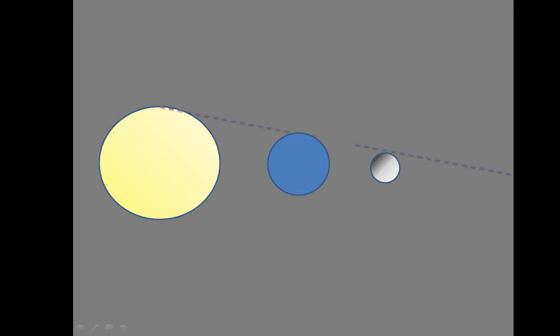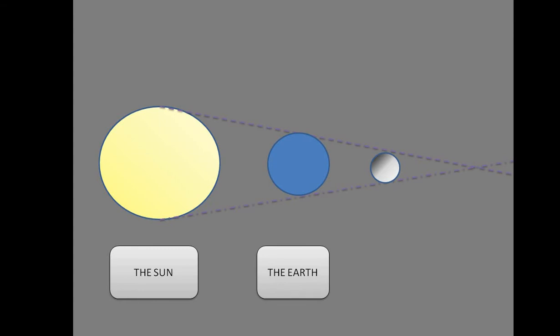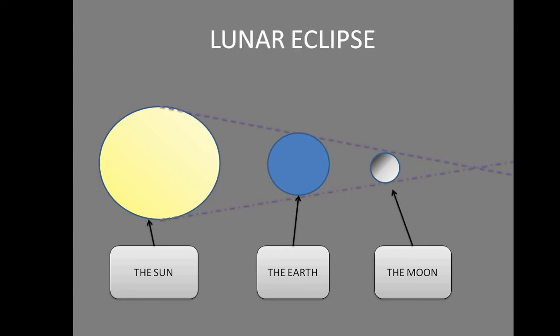The sun is the luminous object, the Earth is a planet, and the moon is a satellite. The Earth along with the moon is orbiting around the sun. While orbiting, if all three come in a straight line and the light of the sun reaching the moon is blocked by the Earth, this forms a lunar eclipse — we are not able to see the moon.